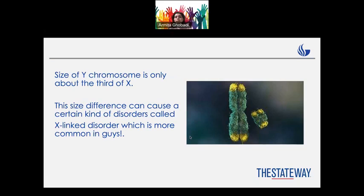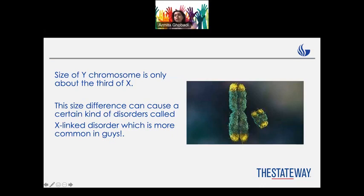One important point is about the size of Y chromosomes. As you can see here, the left one is the X chromosome and the right one is the Y chromosome — it's just so small, roughly about a third of the X chromosome. This size difference makes the Y chromosome more fragile and can cause different kinds of disorders, which we call X-linked disorders.